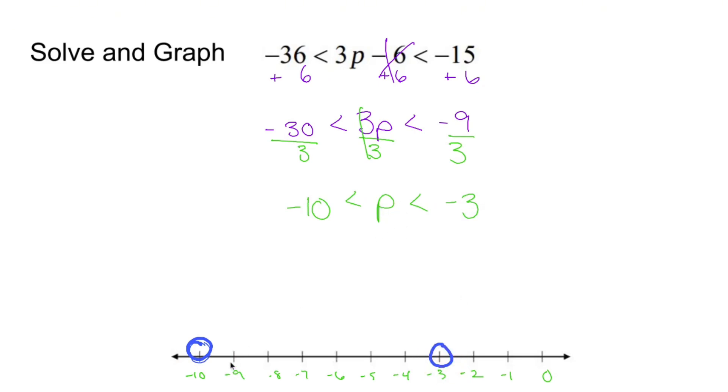And the number that I choose has to be any number in between negative 10 and negative 3, but you're not allowed to include either of them. So what this blue shading represents is I can choose negative 9, I can choose negative 6.5, I can choose negative 4, I can choose negative 3.1 and plug that into this p in the middle. And whatever number in this blue shading that I plug into the original equation is going to give me negative 36 is smaller than that value, and is also smaller than negative 15, and it'll be a true statement.